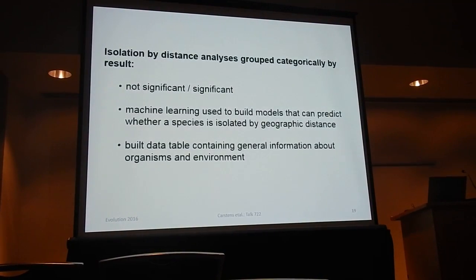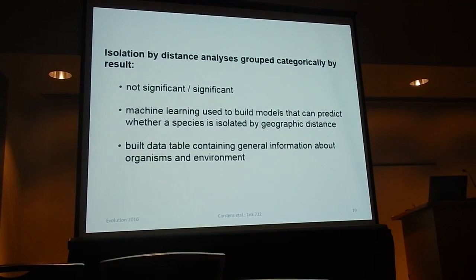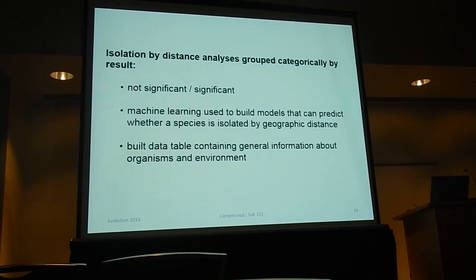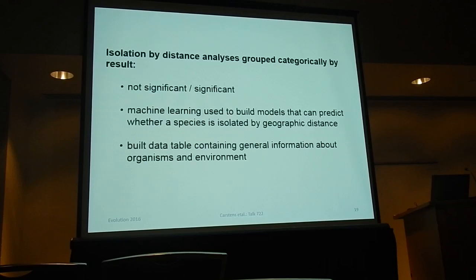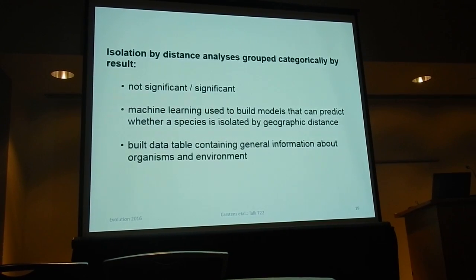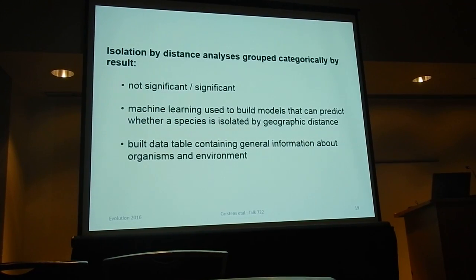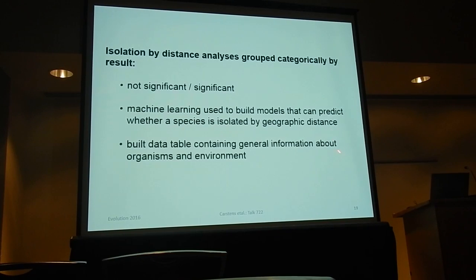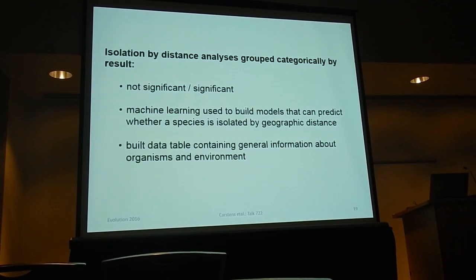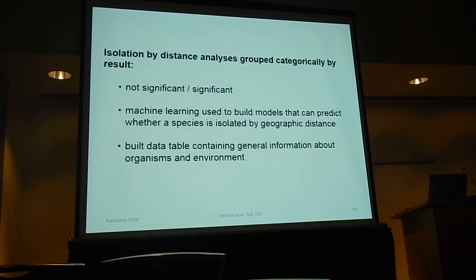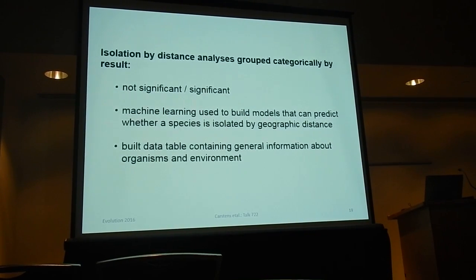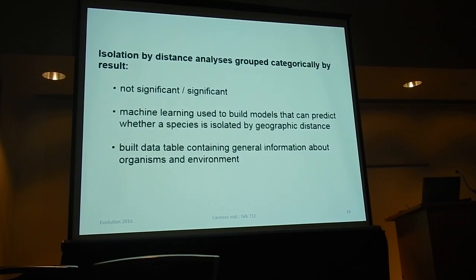We took all of the isolation-by-distance analyses and separated them into two groups: species where we did see IBD, and those where we didn't. We then used machine learning to try to build models that predict whether a species displays isolation by distance. To do this, we needed to build a data table containing general information about all these organisms and their environment. With such a wide taxonomic range, it's harder and harder to get meaningful data into a data table, and so this was a challenge.